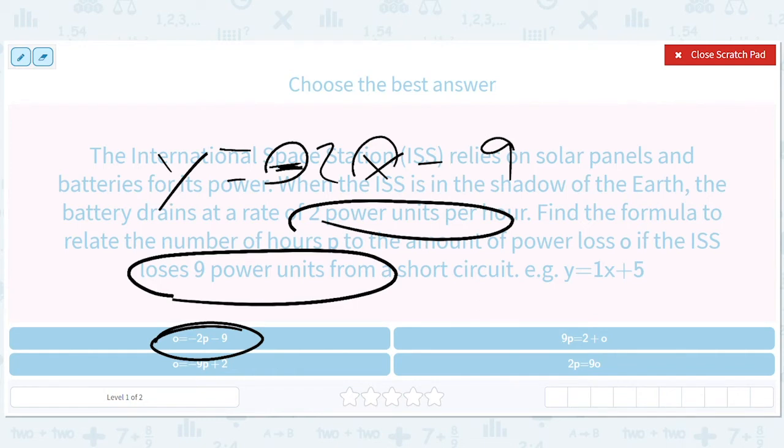And this one is the one that makes sense. In theory, they could trick you by putting the wrong letters on the wrong sides and stuff, but that's not what this is about, right? So O equals negative 2p minus nine.